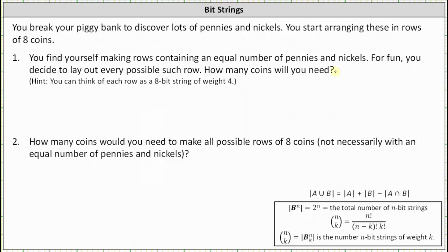So if you're forming rows of eight coins, that means each row would have four pennies and four nickels. For fun, you decide to lay out every possible such row. How many coins will you need? We can solve this problem using a bit string where we can let zero equal a penny and a one equal a nickel.